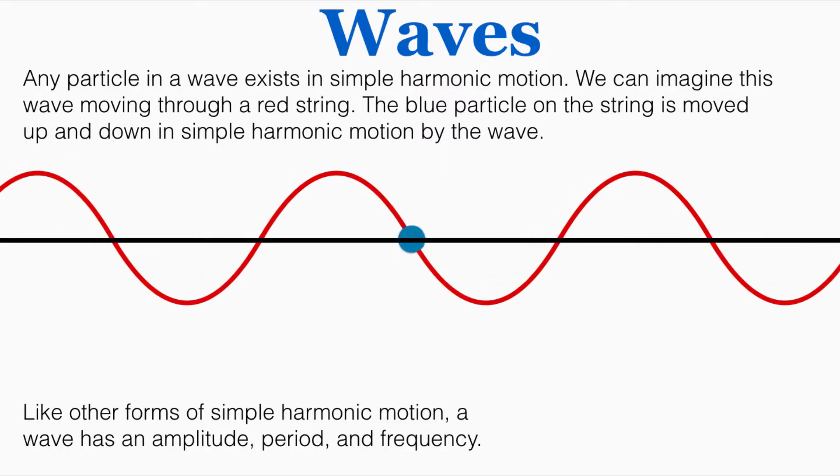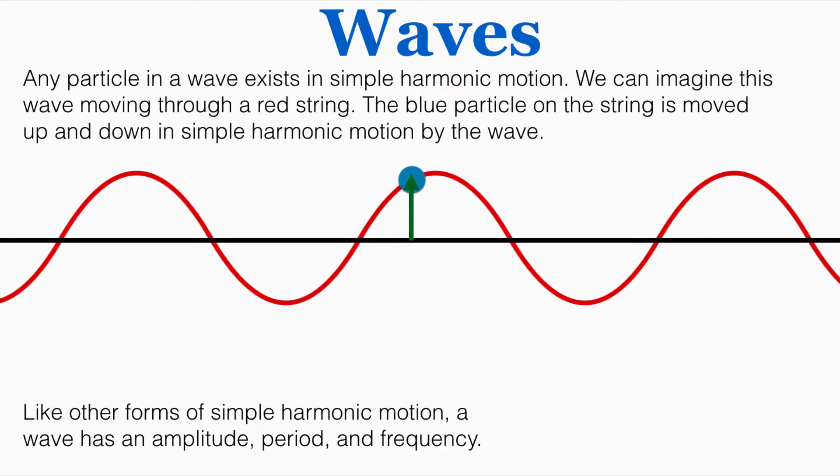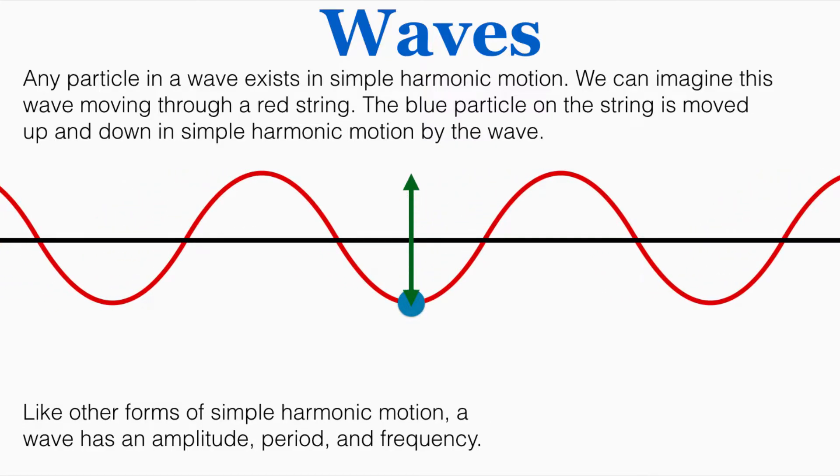You'll remember in simple harmonic motion that the amplitude is the maximum displacement from the center that the object achieves. You can see that these green lines here each show the amplitude that the particle has achieved from the center point. Just like in simple harmonic motion where we say that the amplitude is measured from the equilibrium position, the center to the extreme, we also say that for waves. This length in particular is the amplitude of this wave. It's the displacement from the center of the wave.